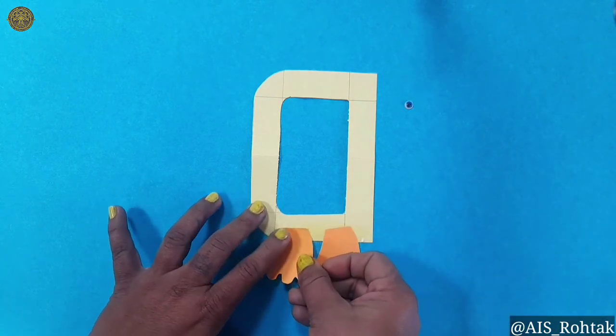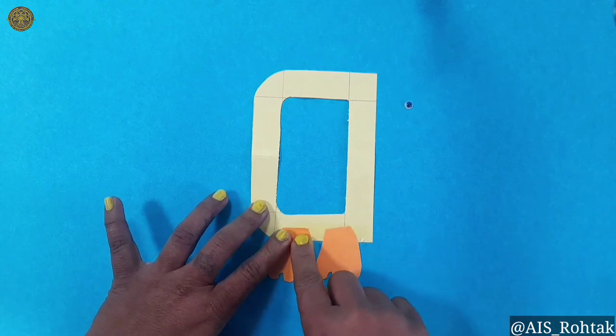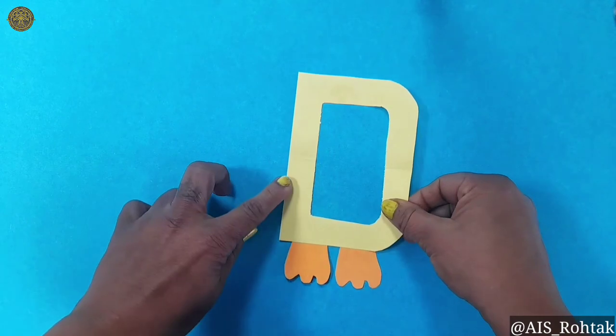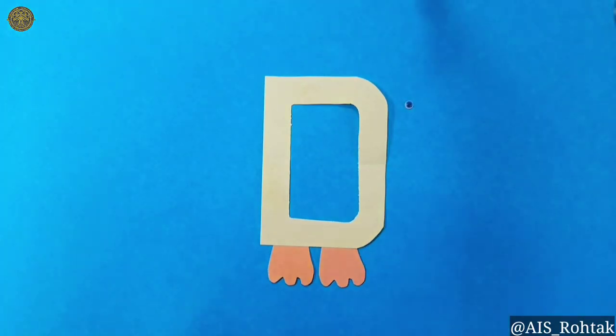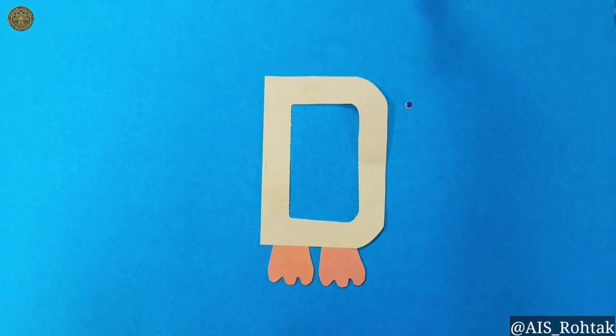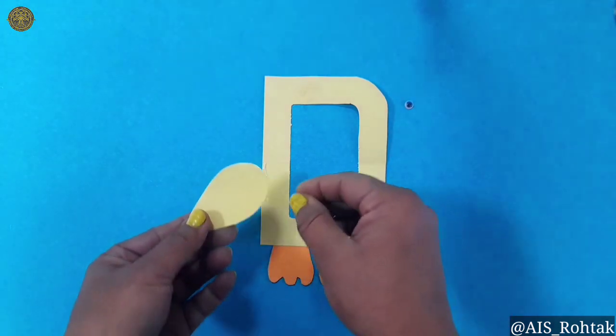After pasting these cut outs, turn the cut out of letter D. After turning the cut out, apply glue stick here and paste this drop shape here.